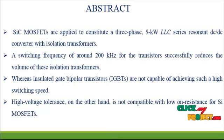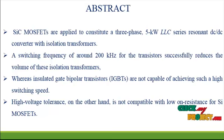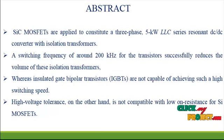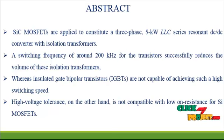Insulated gate bipolar transistors are not capable of achieving such a high switching speed. The high voltage tolerance of SiC MOSFETs at 1200V enables increasing the input voltage up to 600V. However, high voltage tolerance is not compatible with low on-resistance for SiC MOSFETs. A 3-phase circuit topology is used to compensate for the converter and reduce the phase current at the same time.